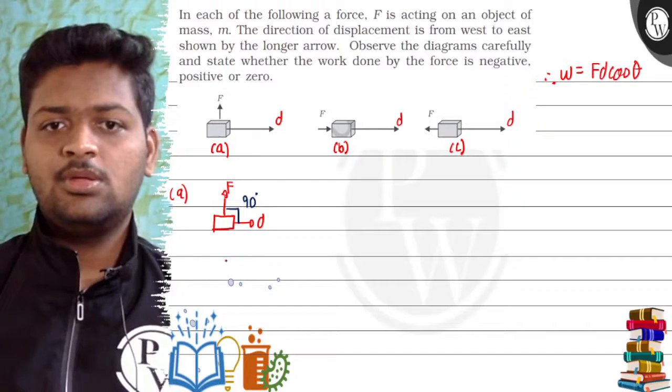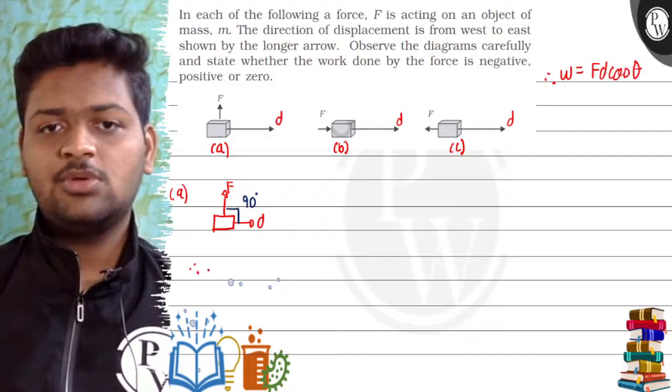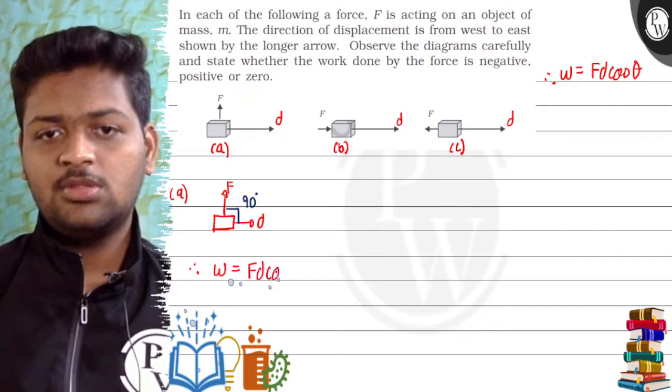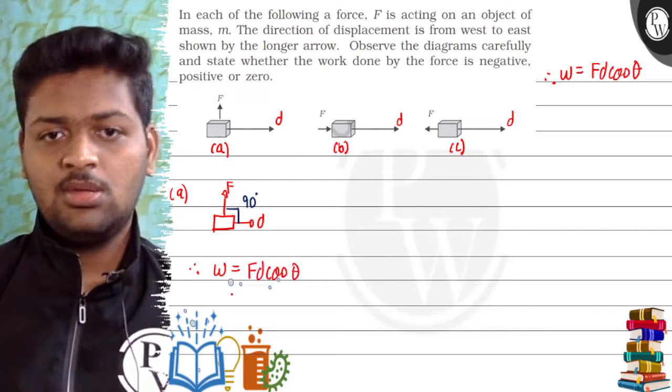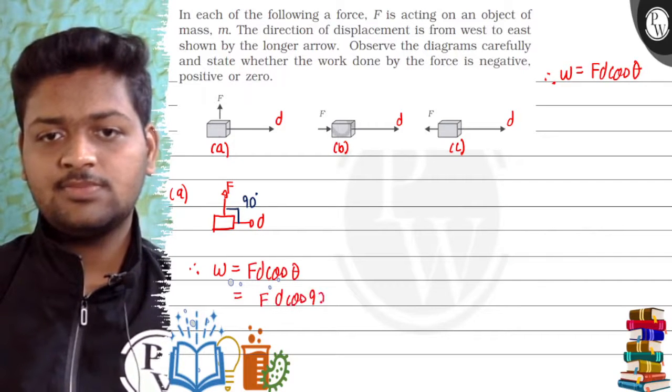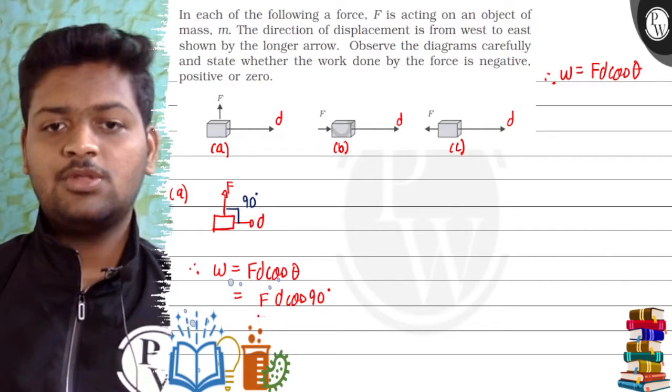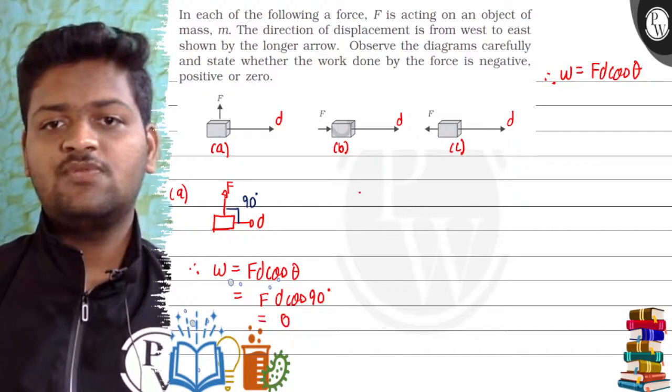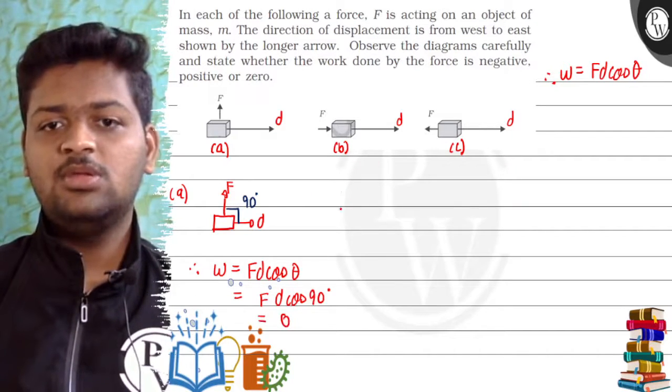So here we come back to this question. Work done is Fd cos theta. So it will become Fd cos 90 degrees, which is cos 90 degrees equals 0. The work done will be 0. So hence in the first case, work done will be 0.